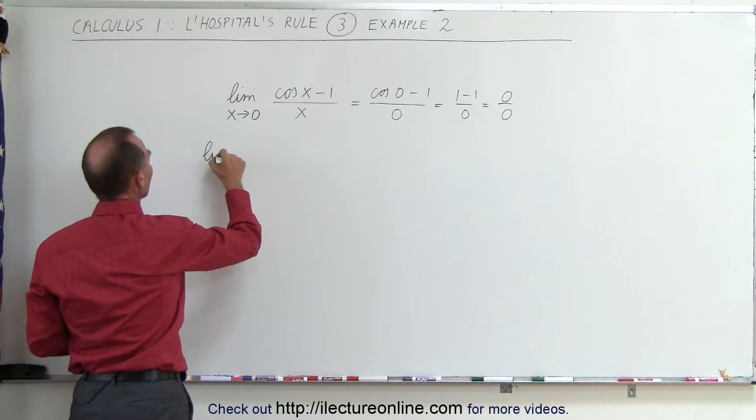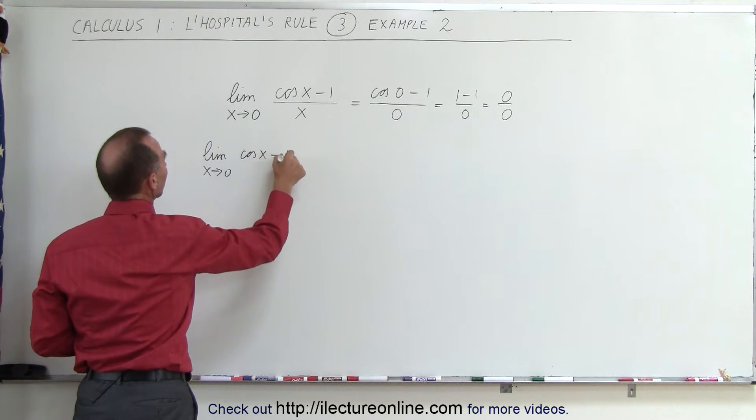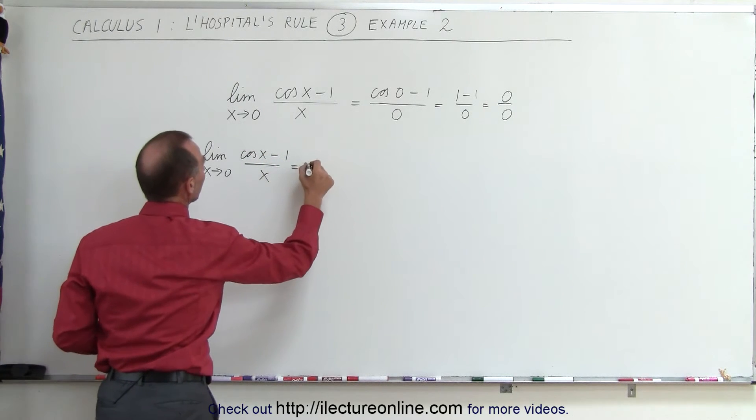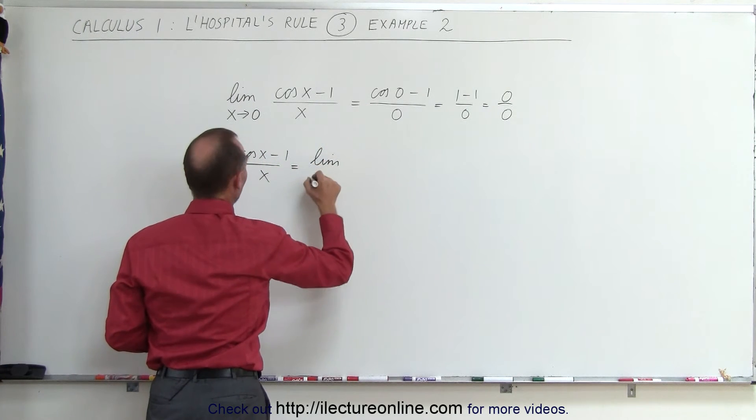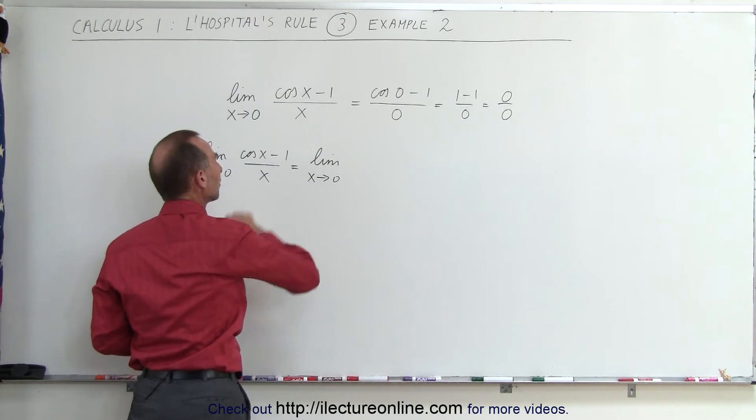The limit as x approaches 0 of the cosine of x minus 1 divided by x is equal to the limit as x approaches 0 of the derivative of the numerator divided by the derivative of the denominator.